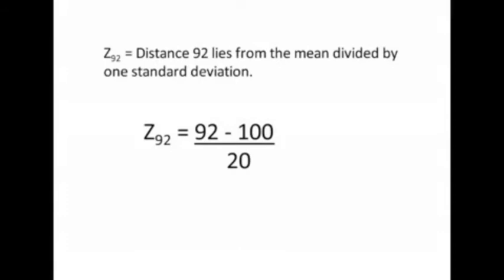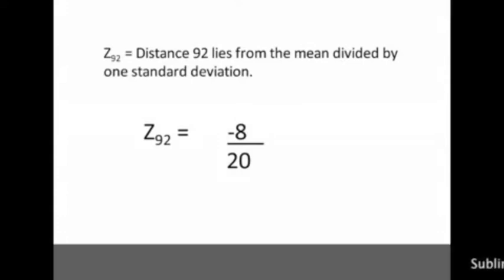Here we go. As we plug in our values, our z for 92 is 92 minus the mean divided by the standard deviation. 92 minus 100 over 20. 92 minus 100 is negative 8. Now bear with me, 92 minus 100 is negative 8. So we now know that the z of 92 is equal to negative 8 divided by 20. The z-score for 92 is negative 0.4.